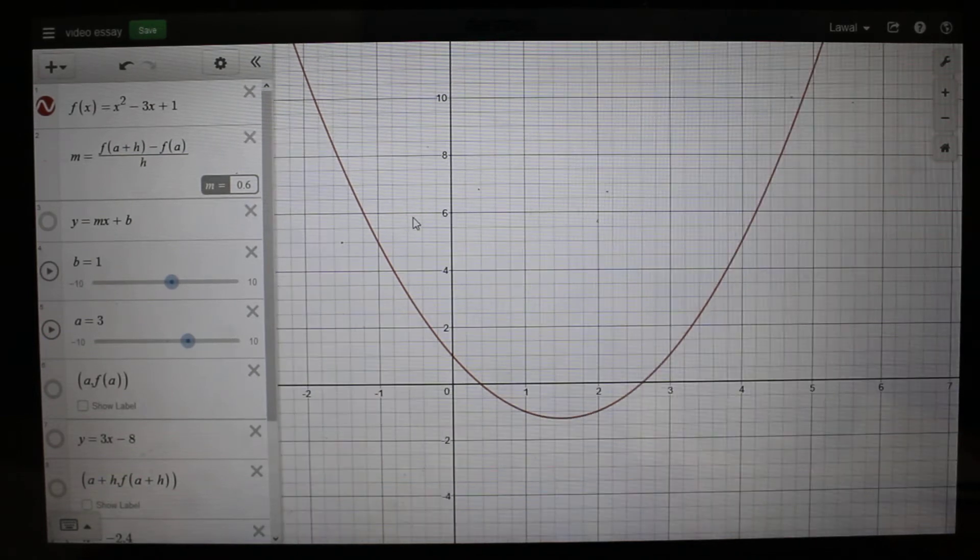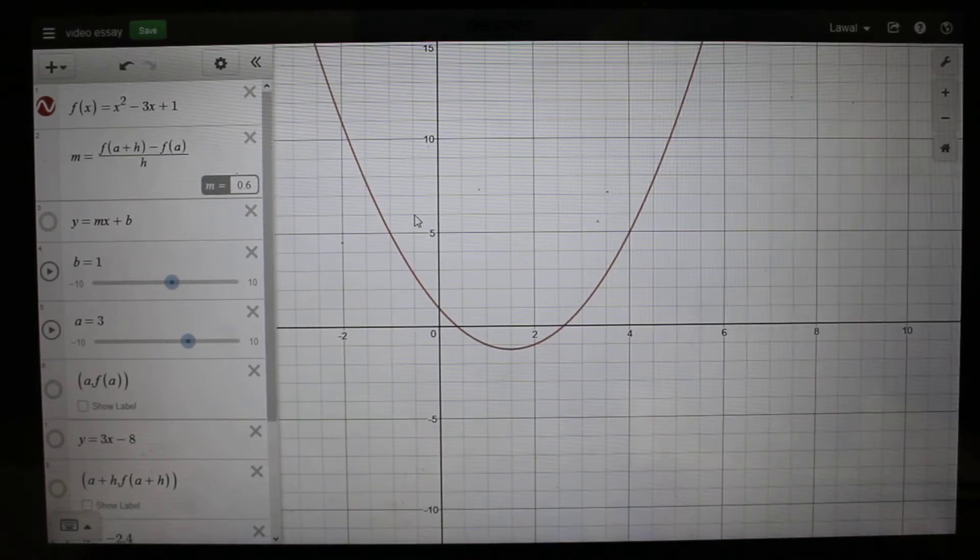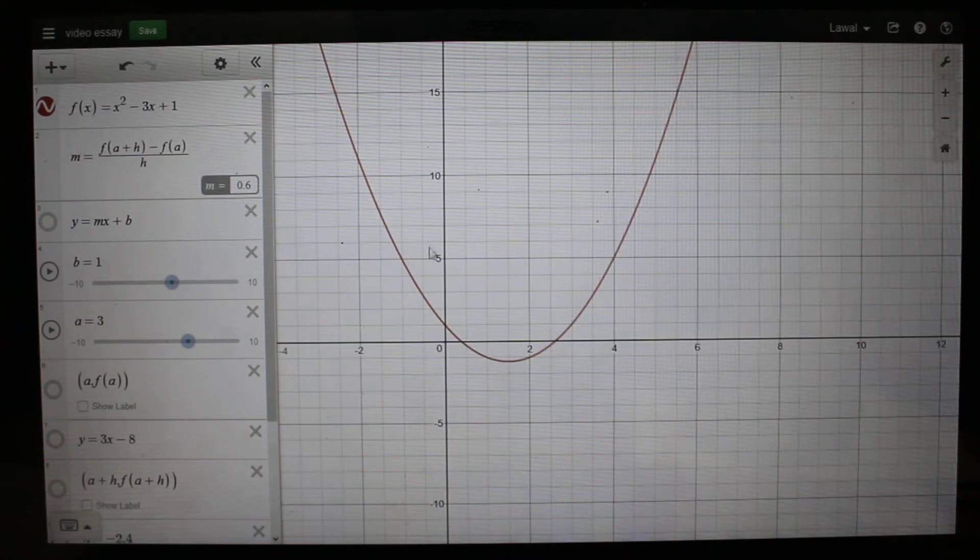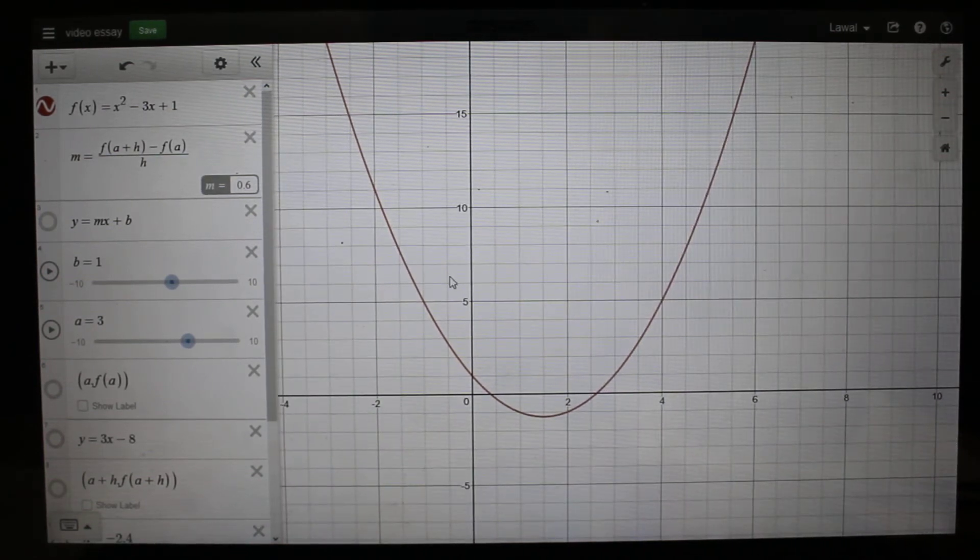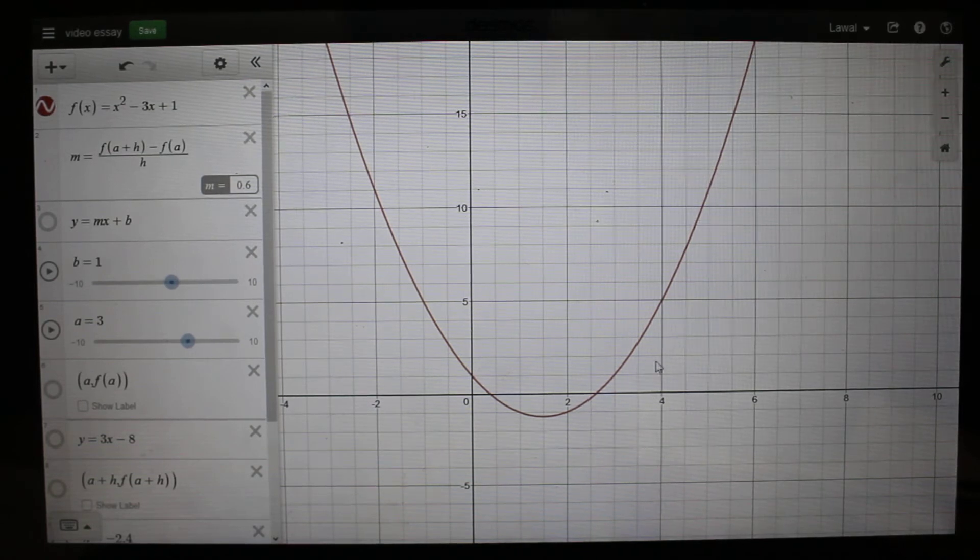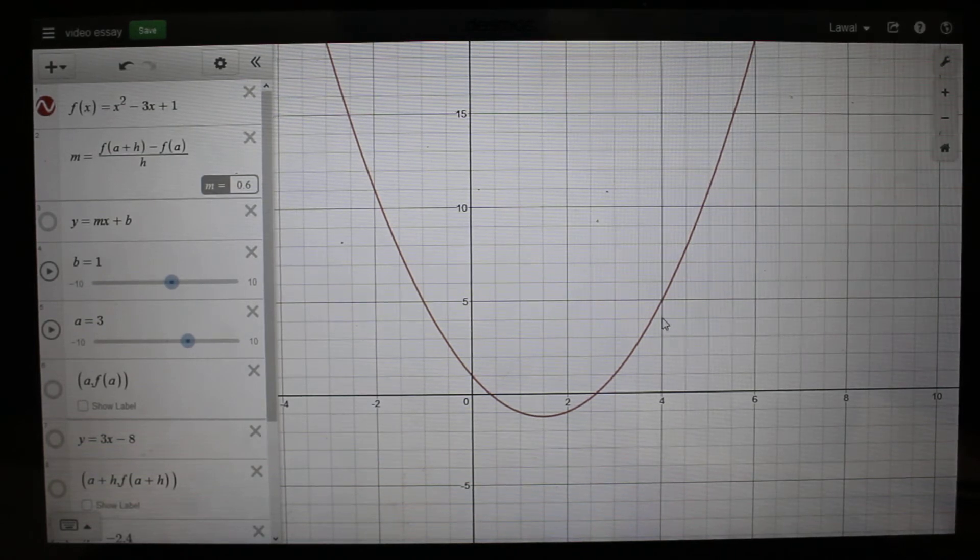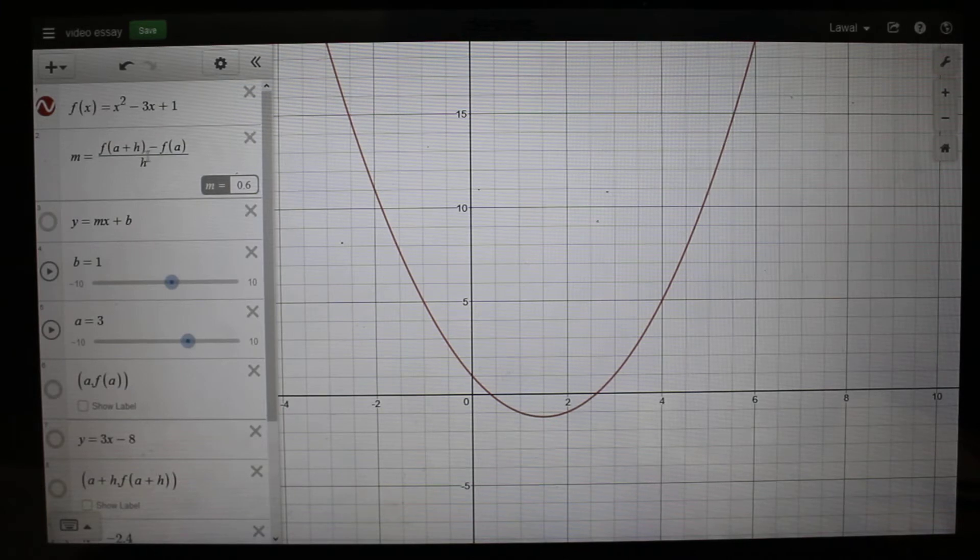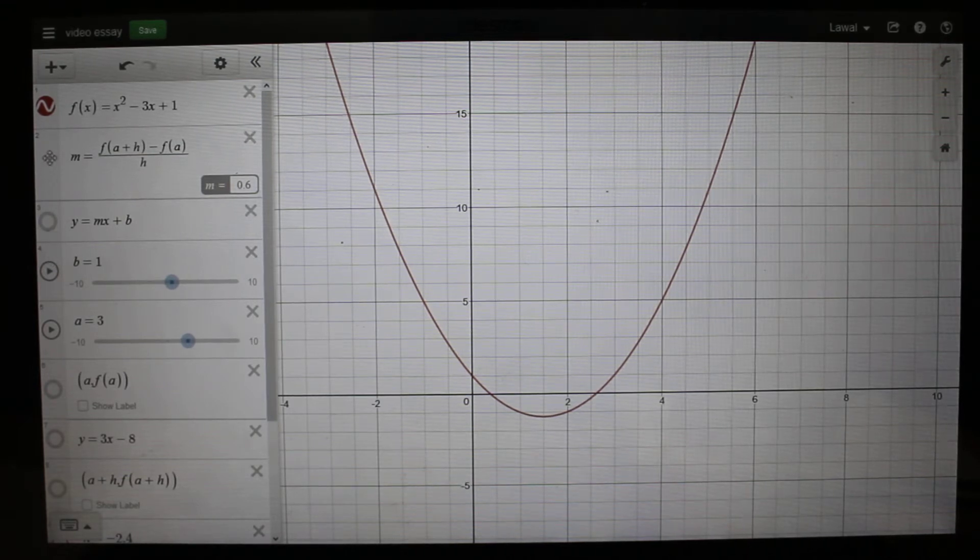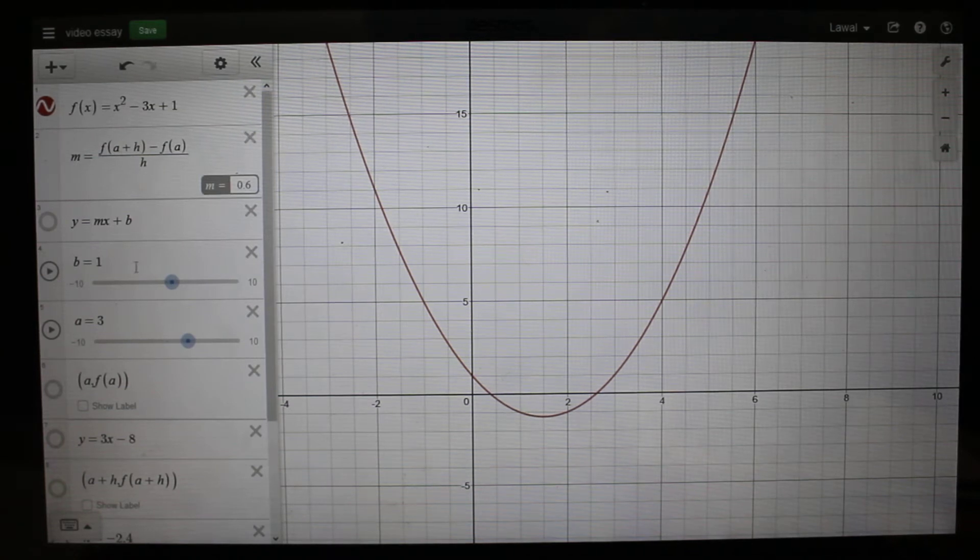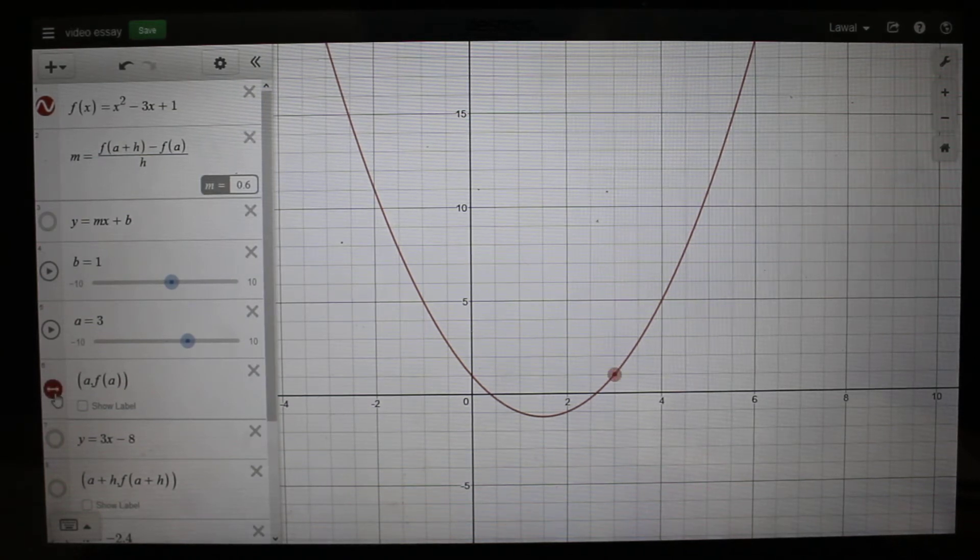When the function is drawn, the function is drawn as this. Now the formula we're given to find the slope of the tangent is f(a + h) - f(a) over h, and with the use of that formula the slope of tangents is given as thus.